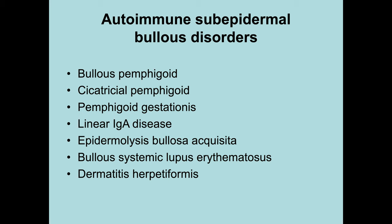I'm going to talk primarily on two autoimmune subepidermal blistering diseases — bullous pemphigoid and epidermolysis bullosa acquisita — because these are the two most often confused with each other. Linear IgA disease is self-explanatory: if the immunofluorescence shows a linear deposition of IgA, then the diagnosis is fairly easy.